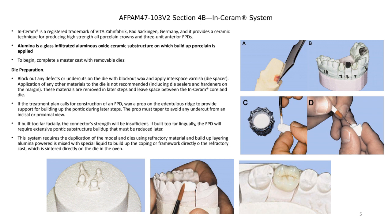To start working on a case, the first thing is to inspect the impression. If there are any voids or disruptions in the margins, we need to call the dentist so they can have the patient come back for another impression. Once the impression is correct, we can disinfect it, pour it up, and fabricate the master cast.